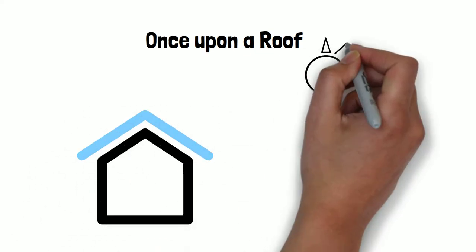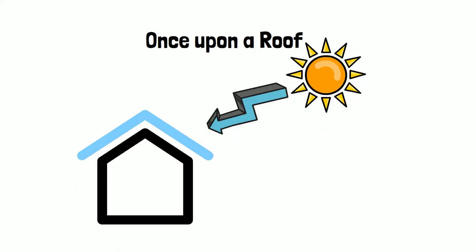Once upon a roof. Conventional roofing surfaces are exposed to the sun all day, being prone to ultraviolet degradation and constant thermal shock. Now, what would be an effective roof?